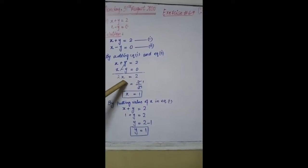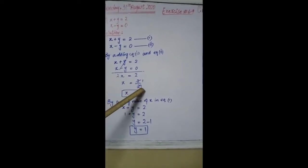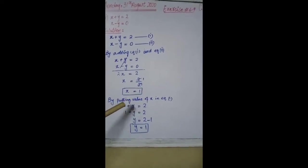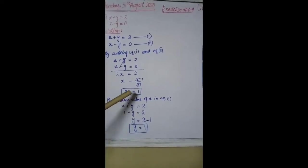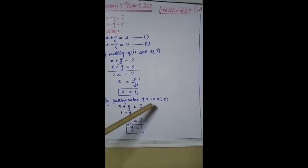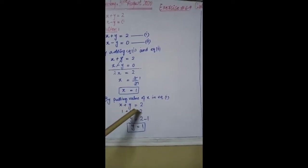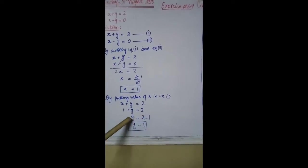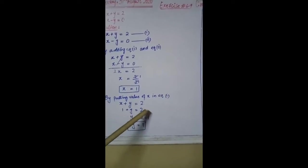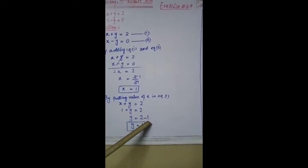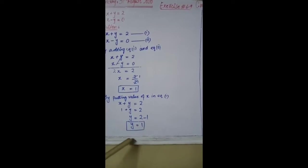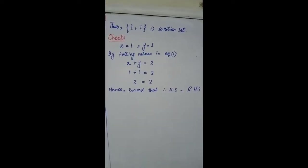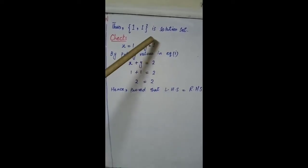Dividing both sides by 2: x = 1. By putting the value of x in equation 1: x + y = 2 → 1 + y = 2, so y = 1. Thus, the solution set is {1, 1}.